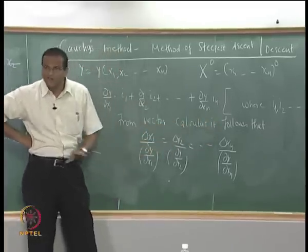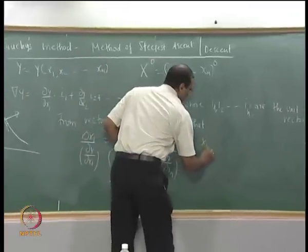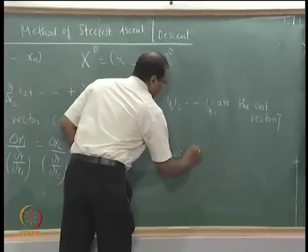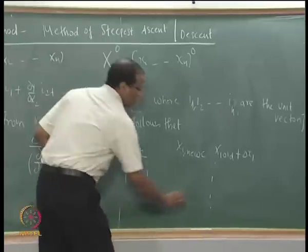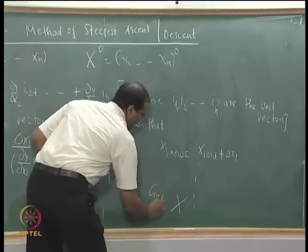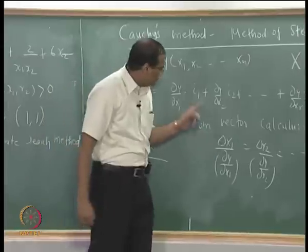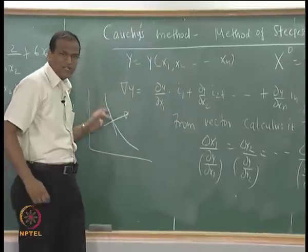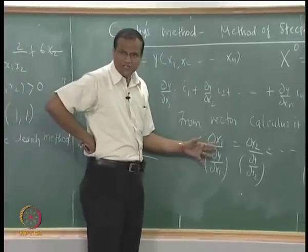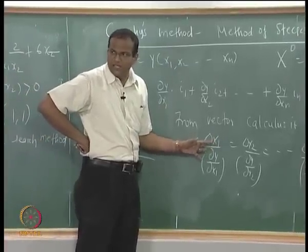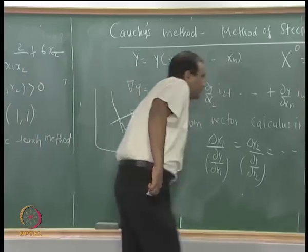If delta x is fixed, then x1_new = x1_old + delta_x1. You can get x1 this way. From vector calculus, when you are orthogonal to the iso-objective line, there is a maximum rate of change of the function — this is the steepest ascent or descent direction.